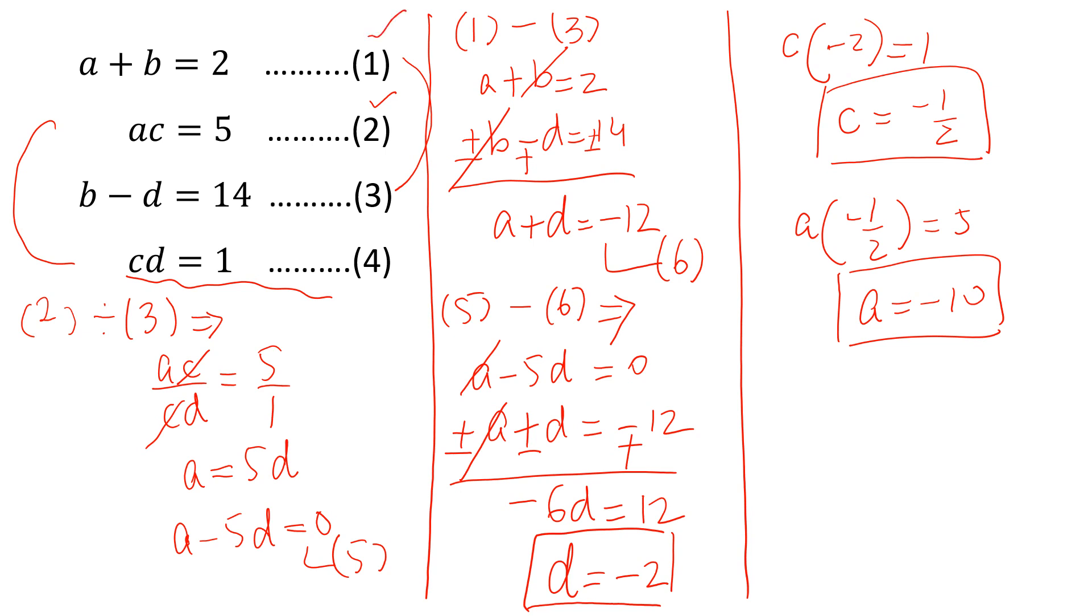Put this value in equation 1. Minus 10 plus B is equal to 2, and B is equal to 2 plus 10. And B is equal to 12. This is the fourth value.